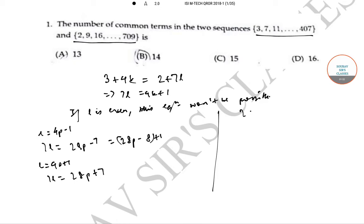Looking at the series, 2 + 7l = 709 gives us l = 101, so l varies from 0 to 101. Similarly, 3 + 4k = 407 gives k = 101, so k also varies from 0 to 101.